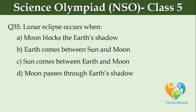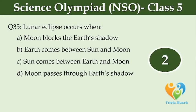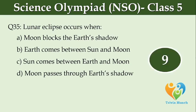Lunar eclipse occurs when dash. Option A: moon blocks the Earth's shadow, Option B: Earth comes between Sun and Moon, Option C: Sun comes between Earth and Moon, Option D: Moon passes through Earth's shadow.